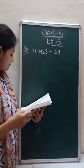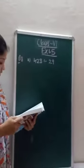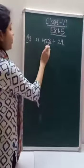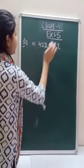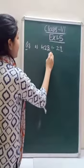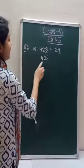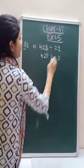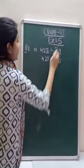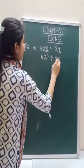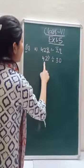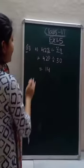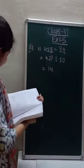Question number 8: estimate the following by rounding off each number to its nearest 10. See the last digit — 3 is smaller than 5, so put 0 in ones and the rest remains the same, giving 30. Then 9 is greater than 5, so put 0 in ones and add 1 in tens. So 30 divided by 42 — 3 times 14 is 42 — giving the answer 14. Similarly, do the second part of question 8.